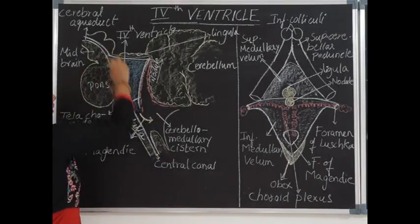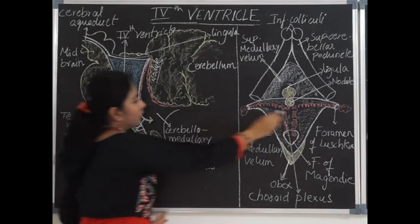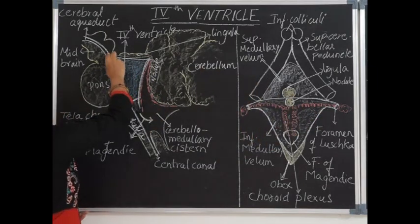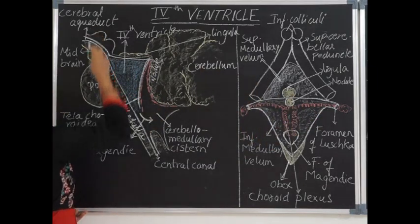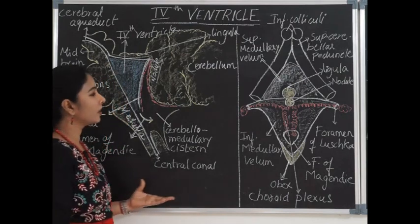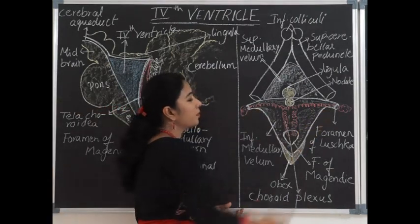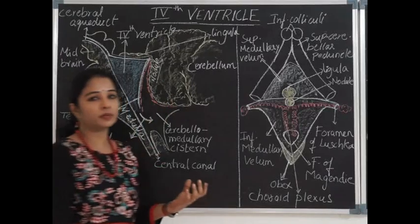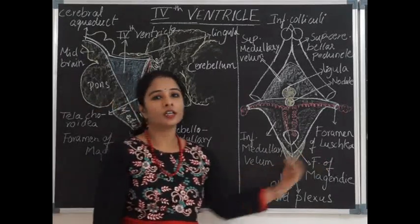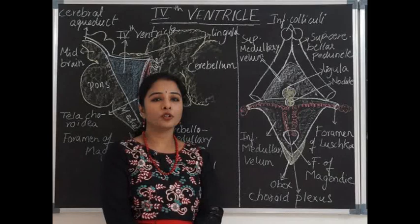The angles are the superior angle, inferior angle, and two lateral angles. The superior angle continues as the cerebral aqueduct, the inferior angle continues as the central canal, and the two lateral angles open as apertures called the foramen of Luschka.